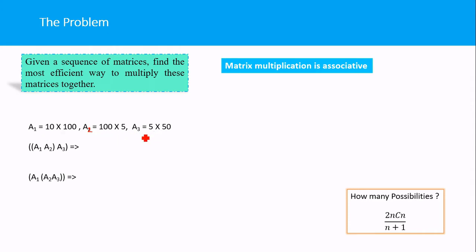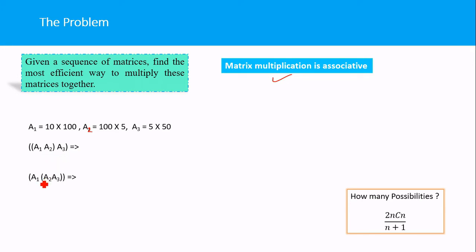There are two possibilities for multiplying these three matrices. First, you can multiply A1 and A2, then multiply the resulting matrix with A3. Or you can multiply A2 with A3, then multiply the resulting matrix with A1. Matrix multiplication is associative, but you cannot change the order arbitrarily — you can only change the grouping.